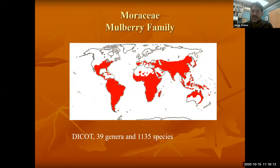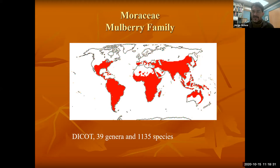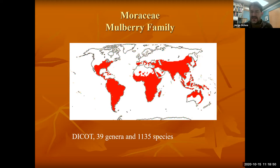We're going to be talking about dicots. Before, we've talked mainly about monocots — the narrow-leafed plants like the orchids and the aroids. Now it's going to be the dicots, which are the broad-leaved plants with netted veins. The ones we're considering include about 39 genera, so this is a small family. The biggest member is the fig or Ficus, and there are about 1,100-plus species.